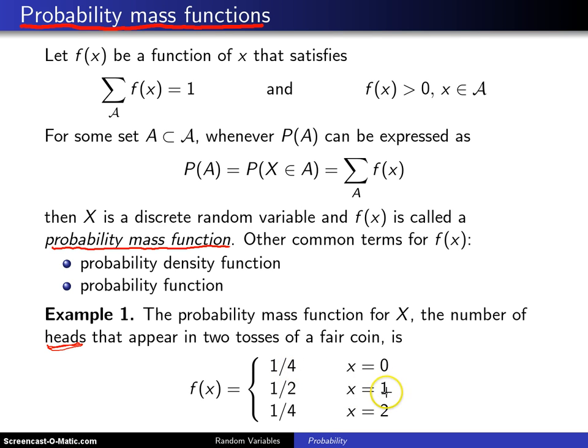Then, associated with 1 head is 1/2, and this 1/2 is the sum of 1/4 and 1/4, and those are the probabilities associated with heads tails and tails heads. That's the probability of x equals 1 head.